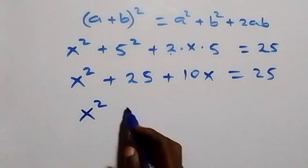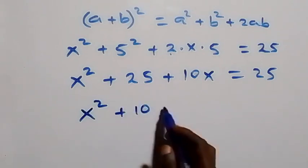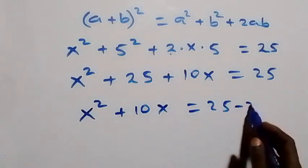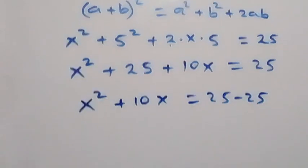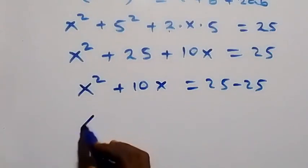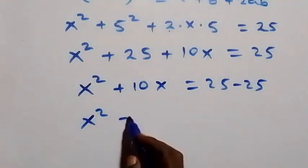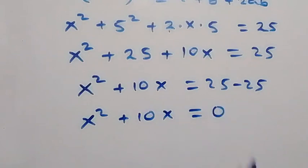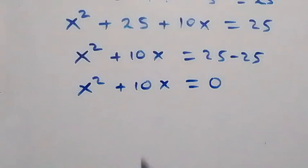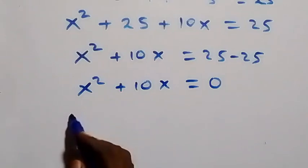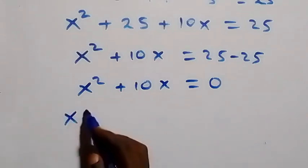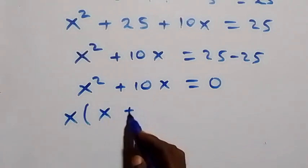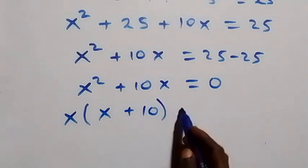This becomes x² plus 10x equals 25 minus 25, so we have x² plus 10x equals zero. From here, x is common, so we factor x out: x times (x plus 10) equals zero.